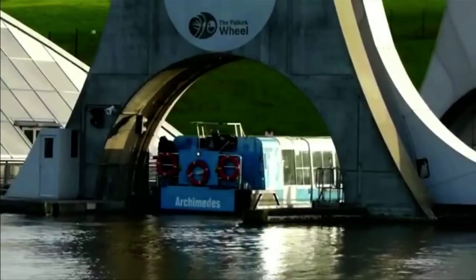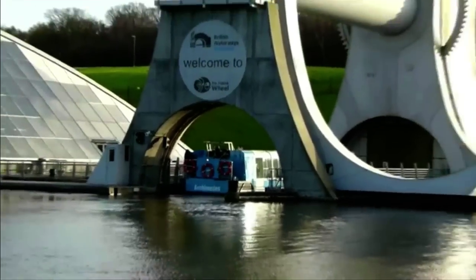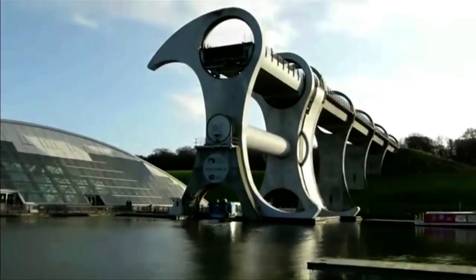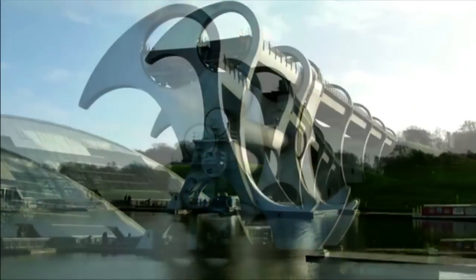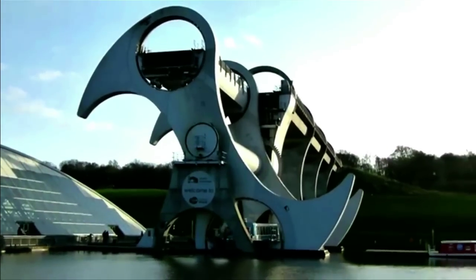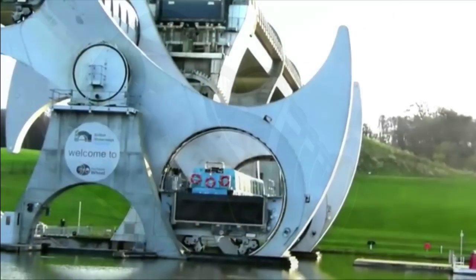This is wonderfully employed by the Falkirk Wheel in Scotland, which takes the place of a series of locks to raise or lower boats more than 30 meters vertically. Here we see a boat entering a gondola at the bottom of the giant wheel.